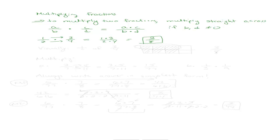Let's talk about what multiplication means visually. I'm saying that I want one-half of three-quarters. Here's three-quarters — three shaded sections. When I say I want one-half of that, I want the top shaded portion. That top shaded portion is actually three-eighths, if you look at it. So that's what multiplying fractions means visually.